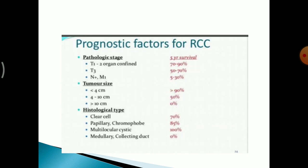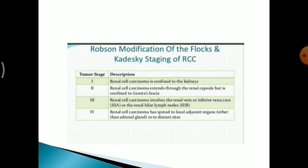The prognostic factors: the 5-year survival rate differs based on histological type, tumour size and pathological stage. There is a good survival rate for multilocular cystic RCC, while papillary and chromophobe types have approximately 85% survival rate. This corresponds to the Robson classification and staging of RCC.